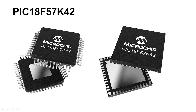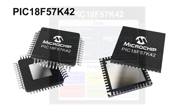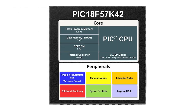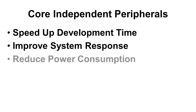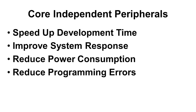The PIC 18F57K42 microcontroller provides an easy to use and implement solution that can greatly reduce the amount of code and development time necessary to get your product up and running. These microcontrollers feature a wide variety of core independent peripherals and intelligent analog features, which allow for more tasks to be done in hardware as opposed to software. This makes development time faster, your system more responsive, saves power, and gives you less opportunity for coding errors and debugging issues.